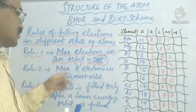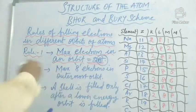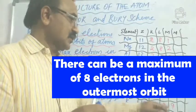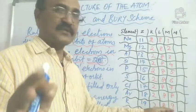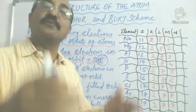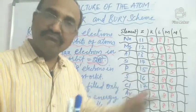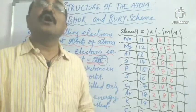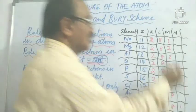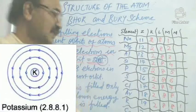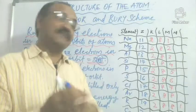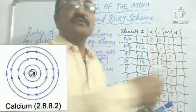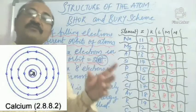Rule two states that a maximum of 8 electrons can occupy the outermost orbit. The M shell could take 18 electrons maximum, but the outermost orbit is not allowed to take more than 8 electrons. So we write 8 electrons in the M shell, and the remaining 1 electron goes to the N shell — giving potassium the configuration 2, 8, 8, 1. Following that, calcium is 2, 8, 8, 2.